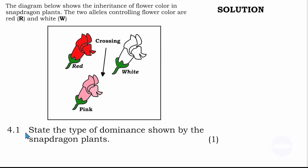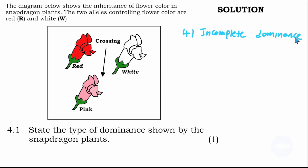Question 4.1 says: state the type of dominance shown by the snapdragon plant. The type of dominance is incomplete dominance. So the answer is incomplete dominance.